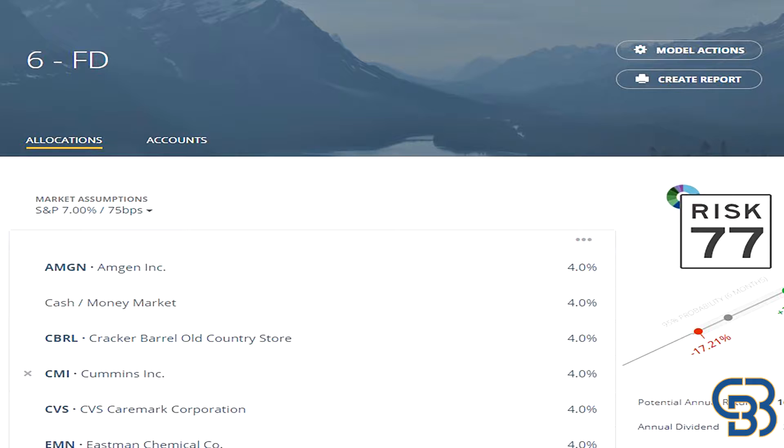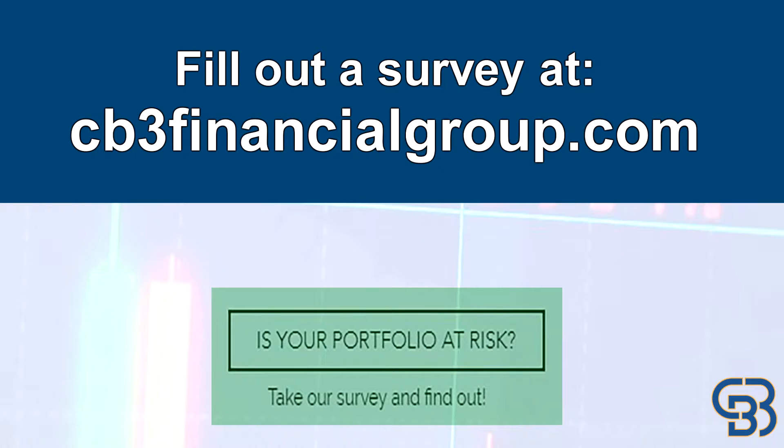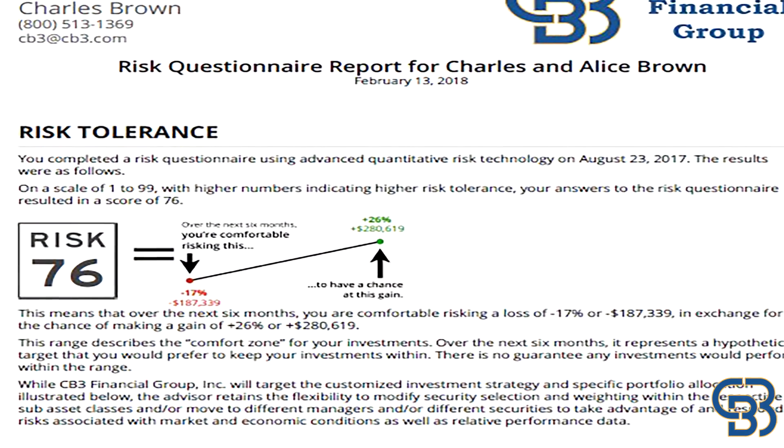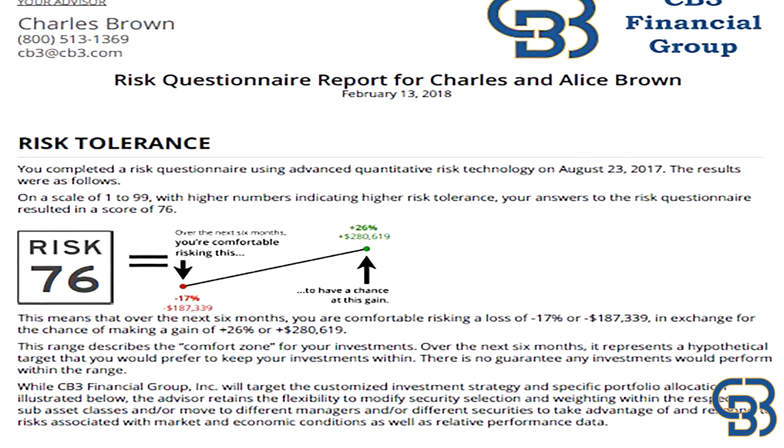That told me three things: one, she didn't understand asset allocation; two, she didn't know what she was invested in; and three, she needed to take a risk profile survey. So she did. What's your risk profile? You can find out by taking just a few minutes to answer questions in this online survey. When you're done, you'll know a lot more about your own personal tolerance for risk and have a great starting point for developing your own customized asset allocation.